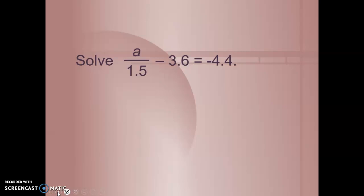Okay, let's solve a divided by 1.5 minus 3.6 equals negative 4.4. First, we need to identify the variable and we need to undo everything that's been done to it, starting first with addition and subtraction. I see that I have a negative 3.6 here. I can get rid of that by adding 3.6 using an inverse operation. Well negative 3.6 plus 3.6, the opposites, those cancel out to zero.